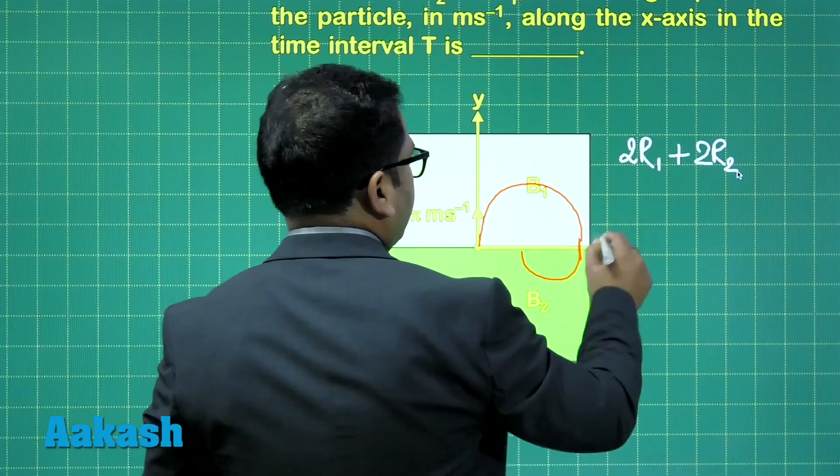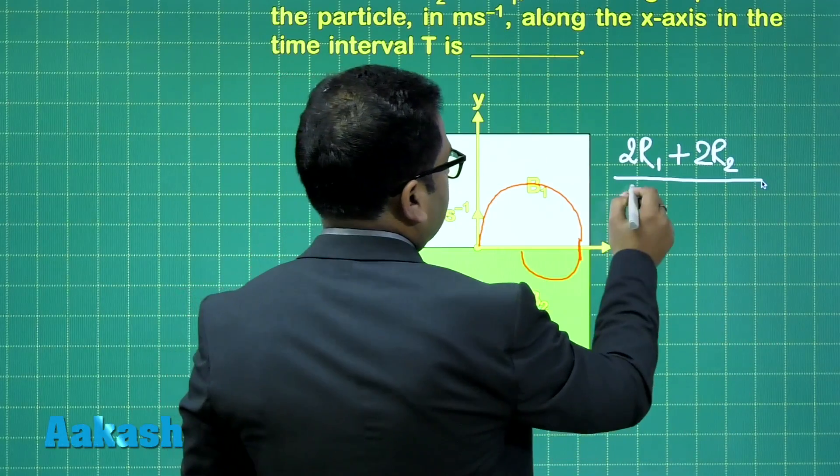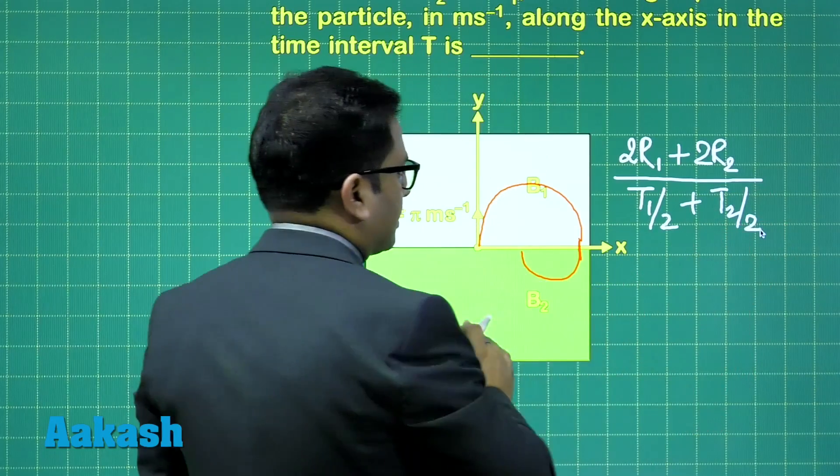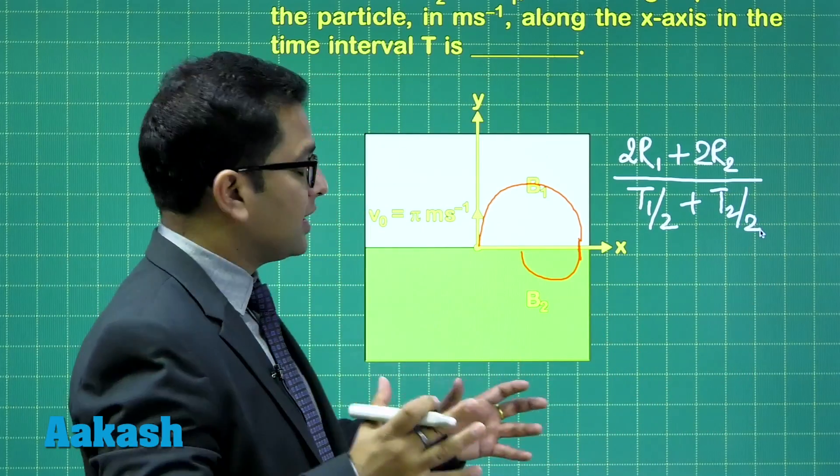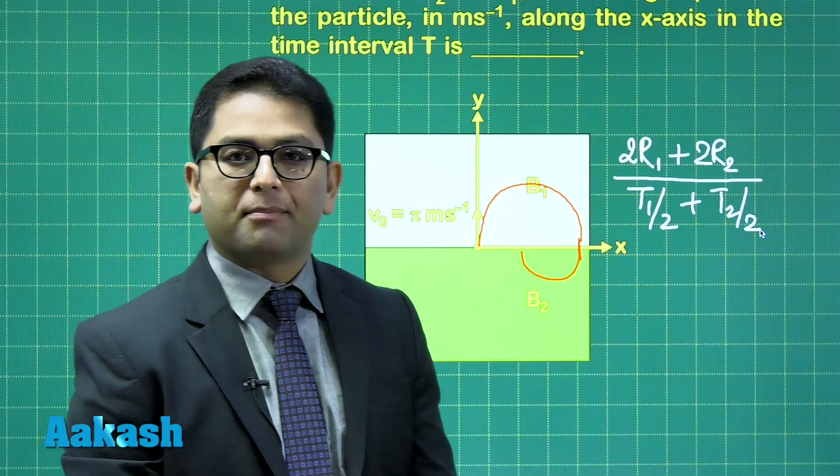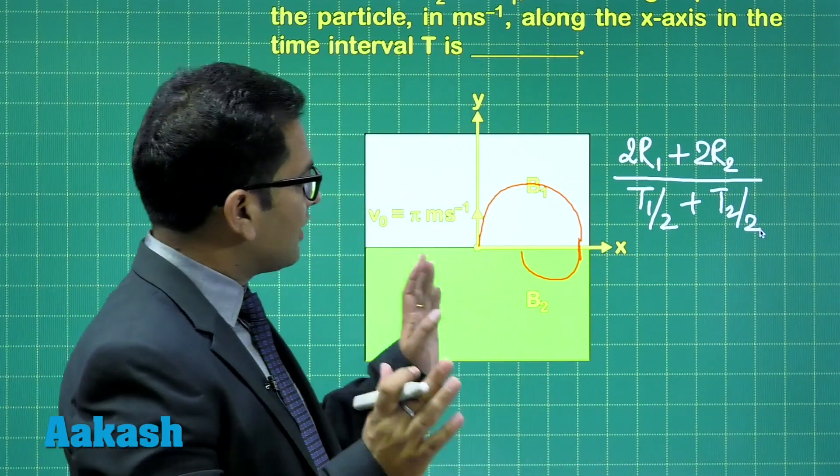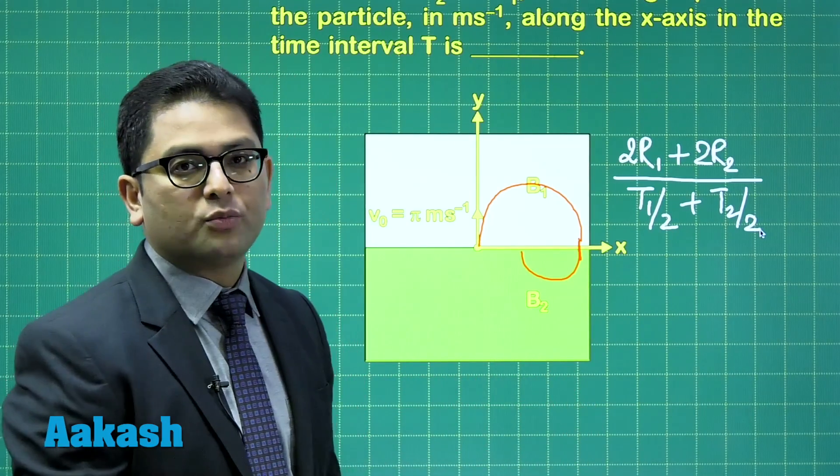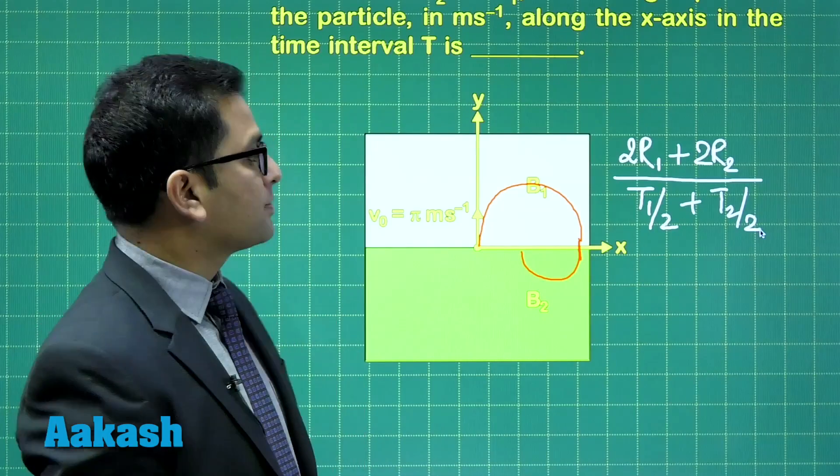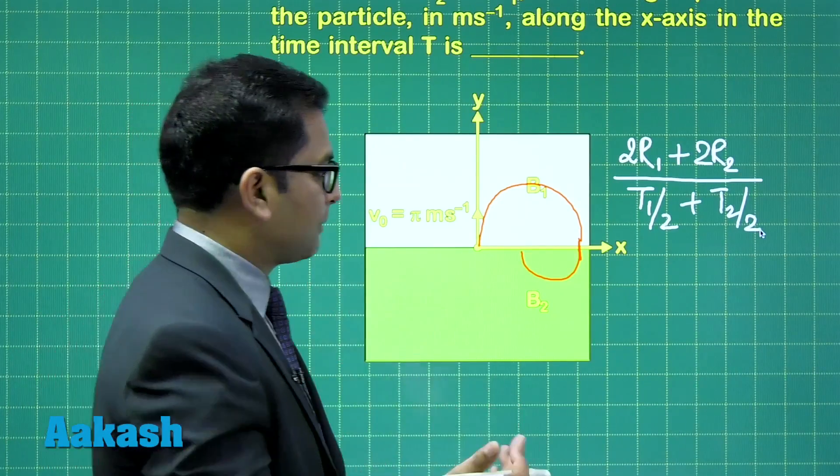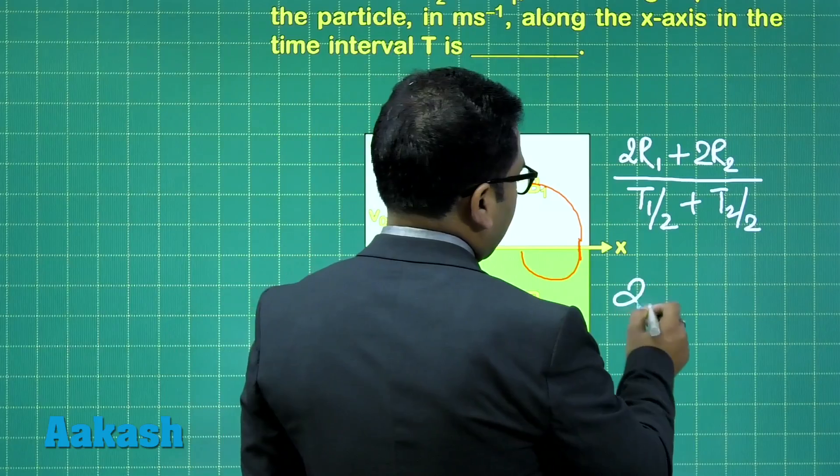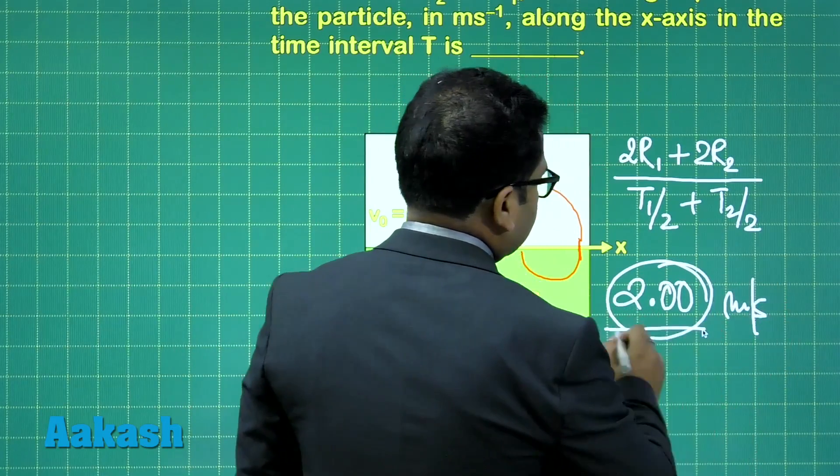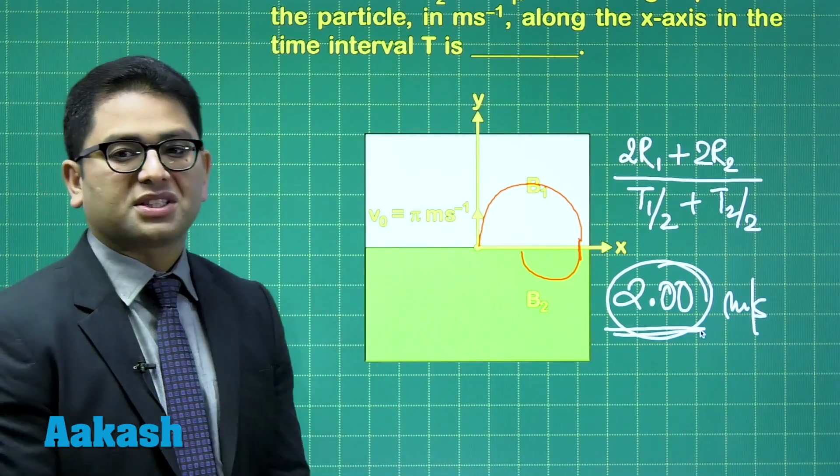And time, individually, they are taking half of the time period. So, that will be T1 by 2 plus T2 by 2, where T1 has a regular meaning, the time period in the magnetic field 1. That's 2 pi m by bq. Rest, everything is a very simple calculation. And when you solve this, the value comes out to be 2 m per second. And as per this defined format, where you need to report the value with two digits after decimal, that will be 2.00 in m per second. So, this integer would be the correct integer for this question.